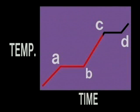At C, the liquid boils. Again, temperature remains constant with time until all the liquid has been converted to gas at point D. Then temperature again increases as the gas is heated.